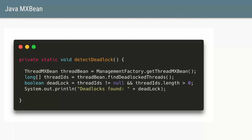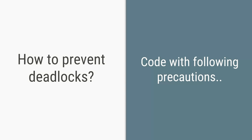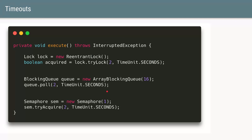Another way to detect a deadlock at runtime is through a Java API you can run continuously in the background. You retrieve a ThreadMXBean using ManagementFactory, and call findDeadlockedThreads(), which returns an array of all thread IDs currently in a deadlock state.